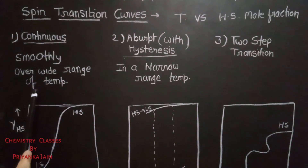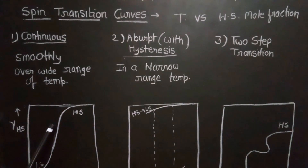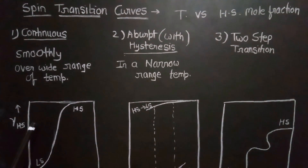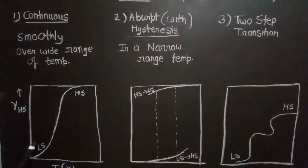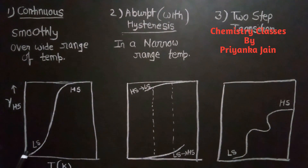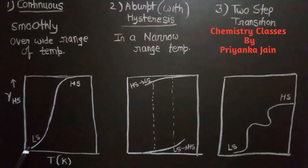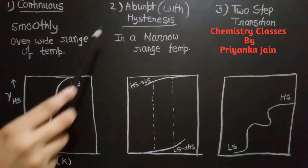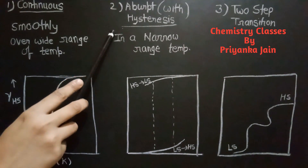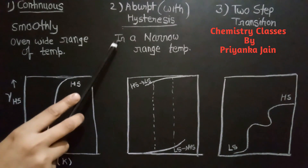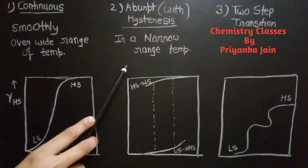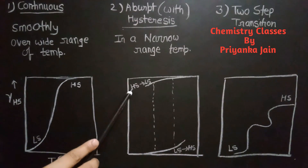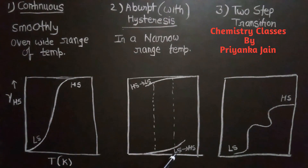There are three types of spin transition curves. The first is the continuous type, where spin transition occurs smoothly with little or no hysteresis over a very wide temperature range — possibly hundreds of Kelvin. The second is the abrupt type, where transition occurs with hysteresis over a very narrow temperature range. This graph shows transition from high spin to low spin and back in a small temperature interval.